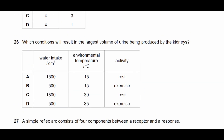Question twenty-six: which conditions result in the largest volume of urine being produced? Drinking more water naturally produces more urine. At a higher temperature your body needs more water to sweat and cool down; at a lower temperature you sweat less. Therefore at low temperature with high water intake, more urine would be produced. The answer is A.